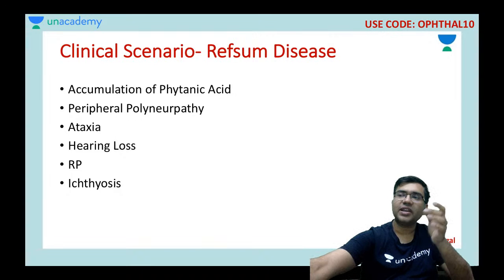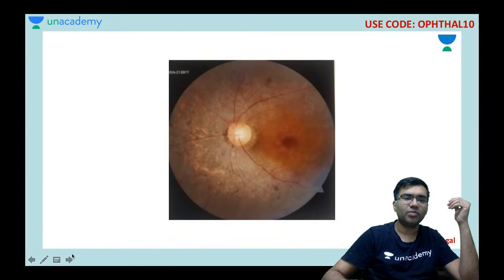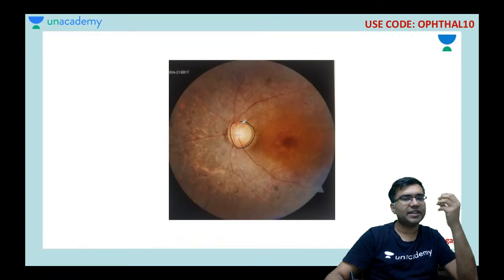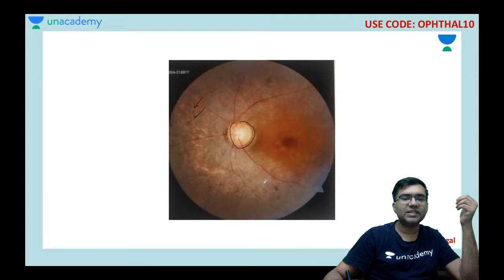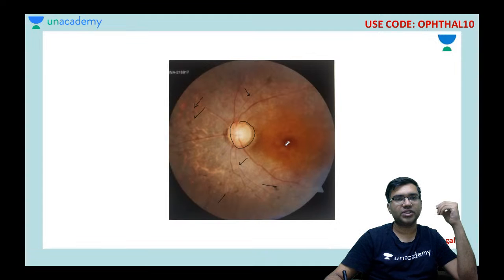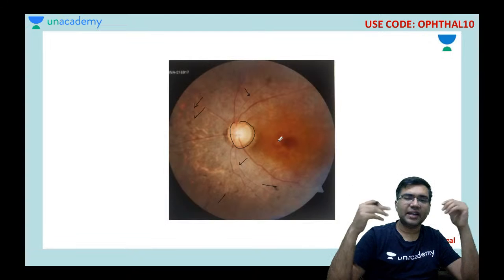In the fundus image of a retinitis pigmentosa patient, the disc is pale (optic atrophy), bony spicule pigmentation is visible around the vessels, and the arteries appear very thin — this is arteriolar attenuation. These are the characteristic features of retinitis pigmentosa.